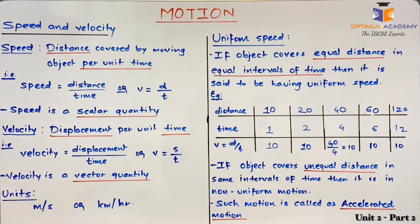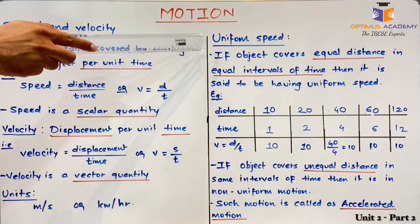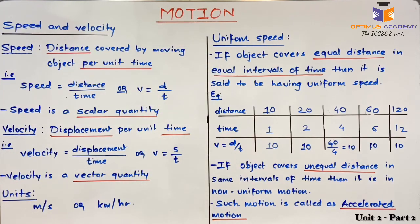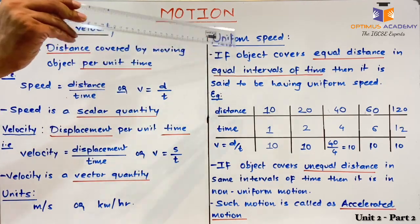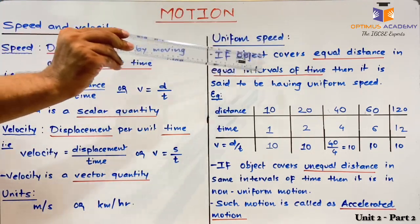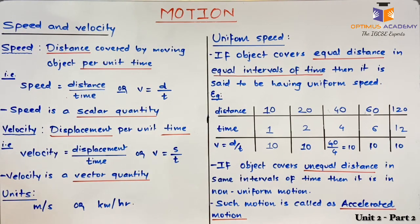Now in the next topic we are going to discuss about uniform speed. Uniform speed is defined as: if an object covers equal distance in equal intervals of time, then it is said to be moving with uniform speed.